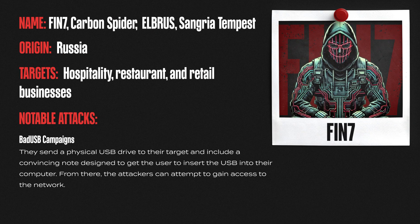Fin7, also known as Carbon Spider, Elbrus or Sangria Tempest, is a Russian criminal hacking group. They initially targeted hospitality, restaurants and retail companies using specially crafted phishing emails to gain initial access. Once they compromise a target, the group uses malware and other techniques to maintain persistence, exfiltrate data and move laterally across the network.